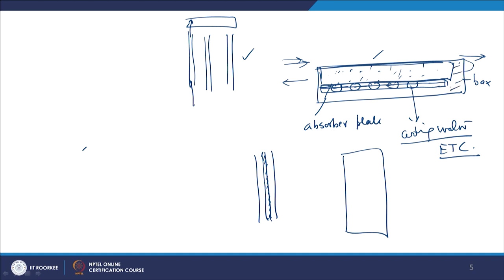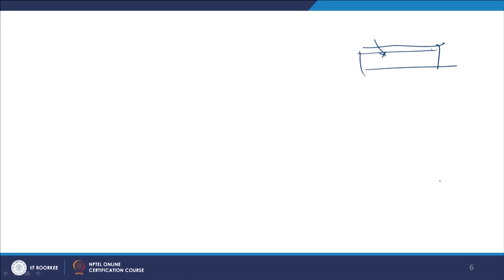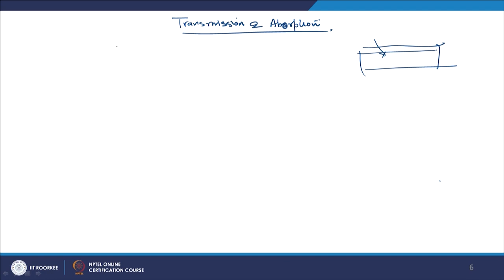In flat plate collectors, insulation is important — if proper insulation is not done, efficiency may drop drastically. The energy reaching the collectors comes through the transmission cover plate in two forms: energy transmitted to the absorber by transmission and by absorption.